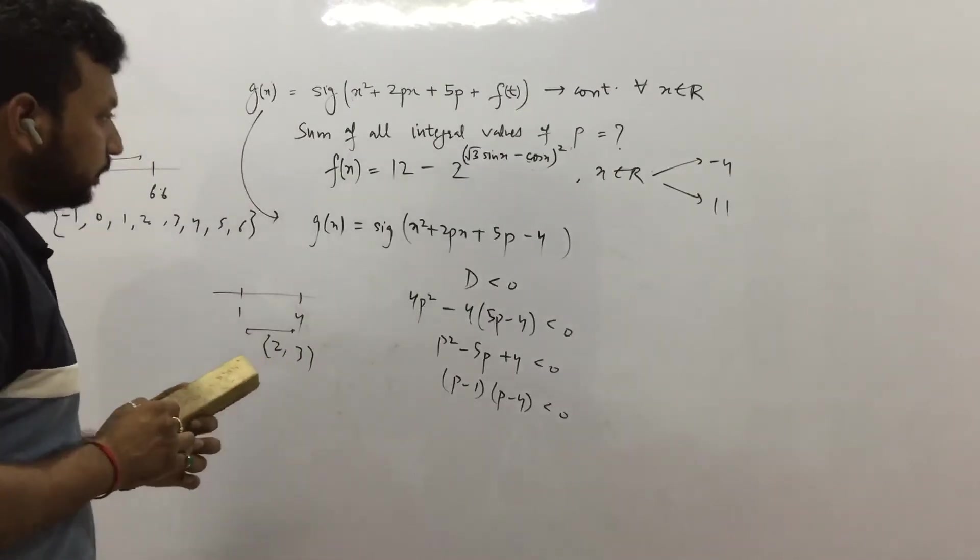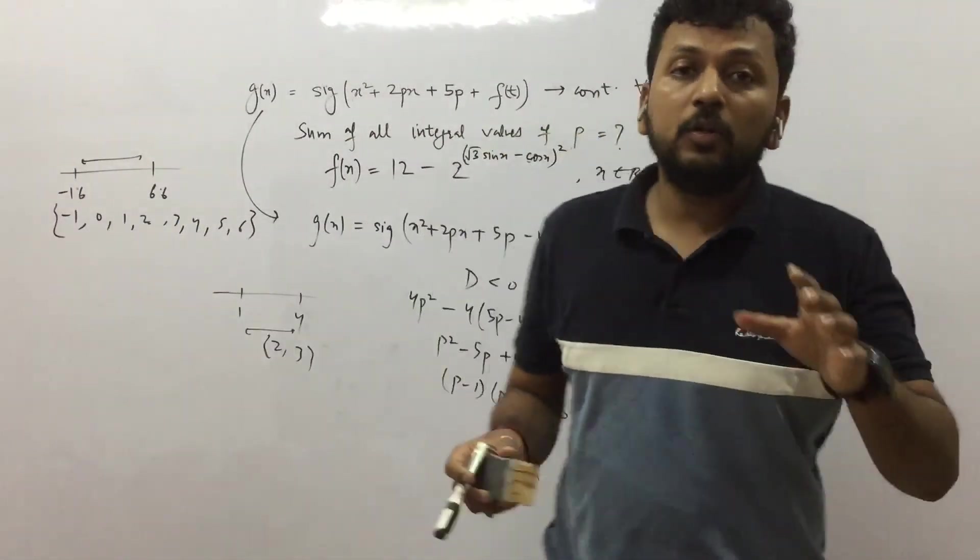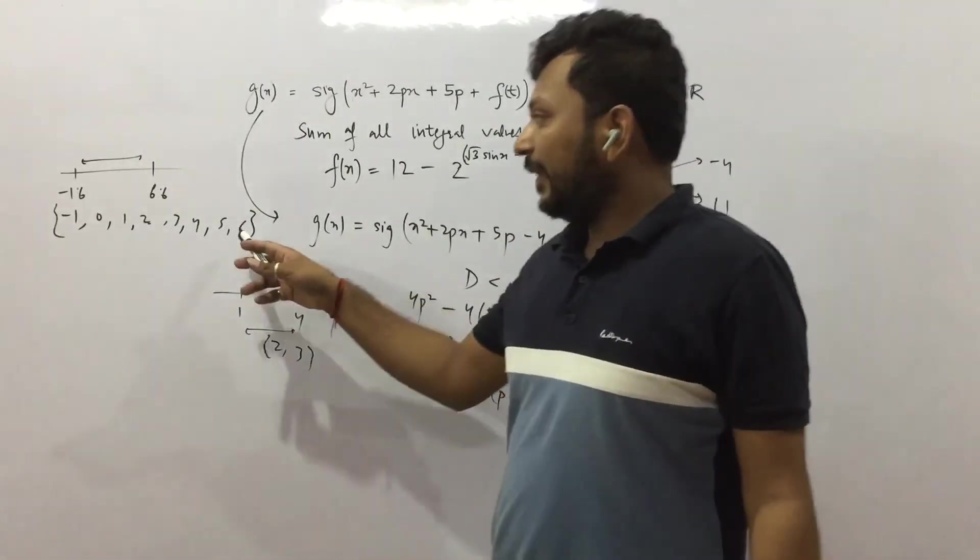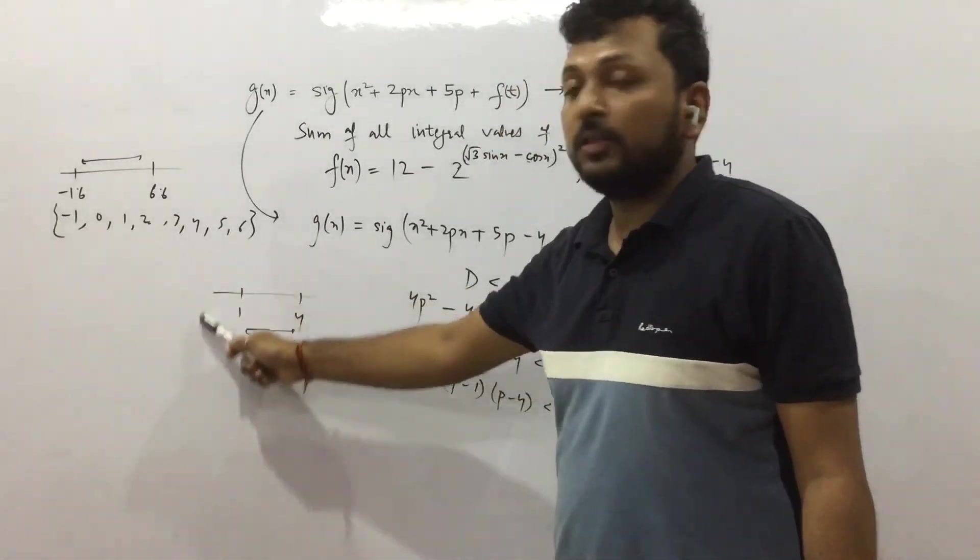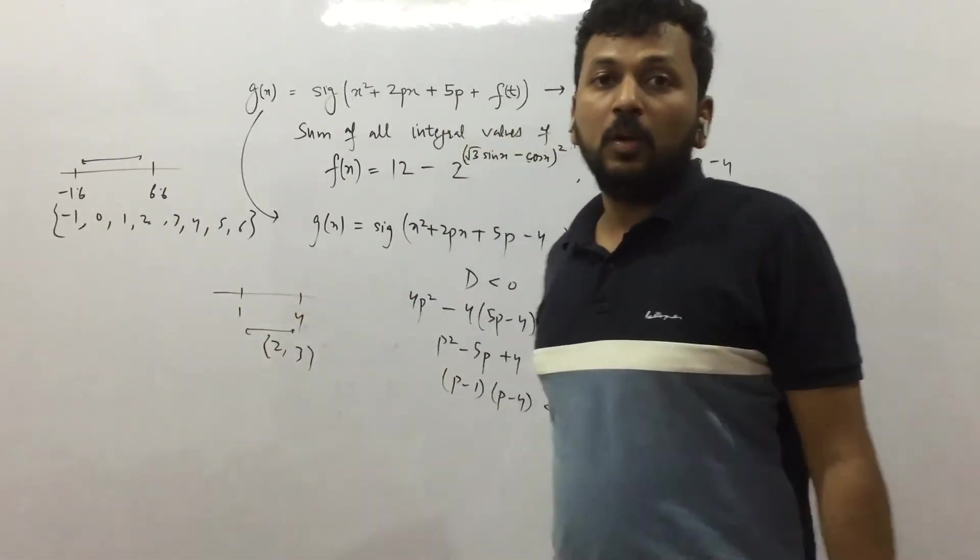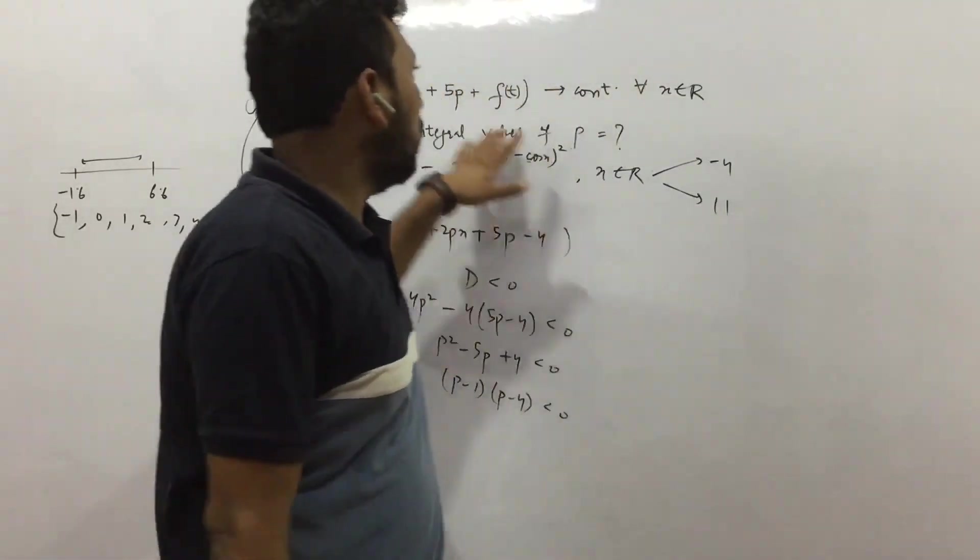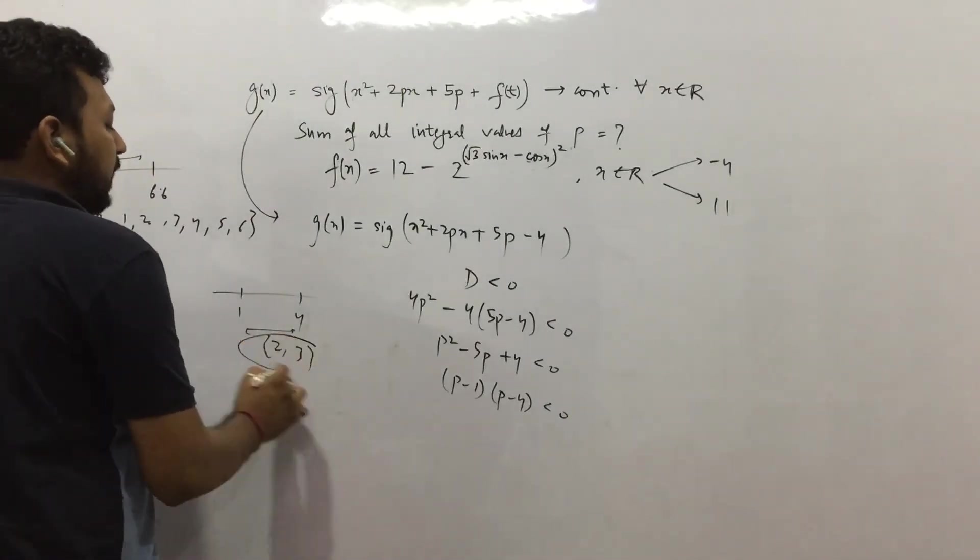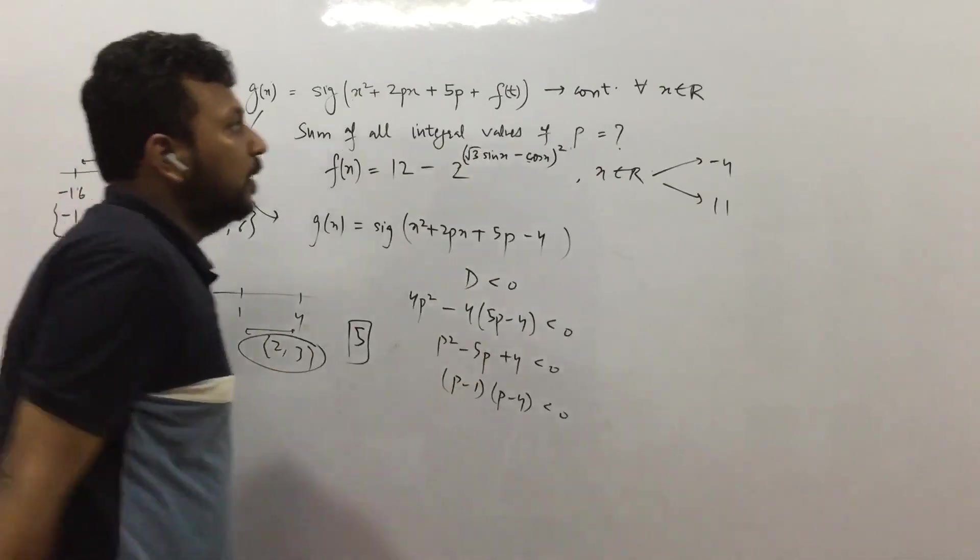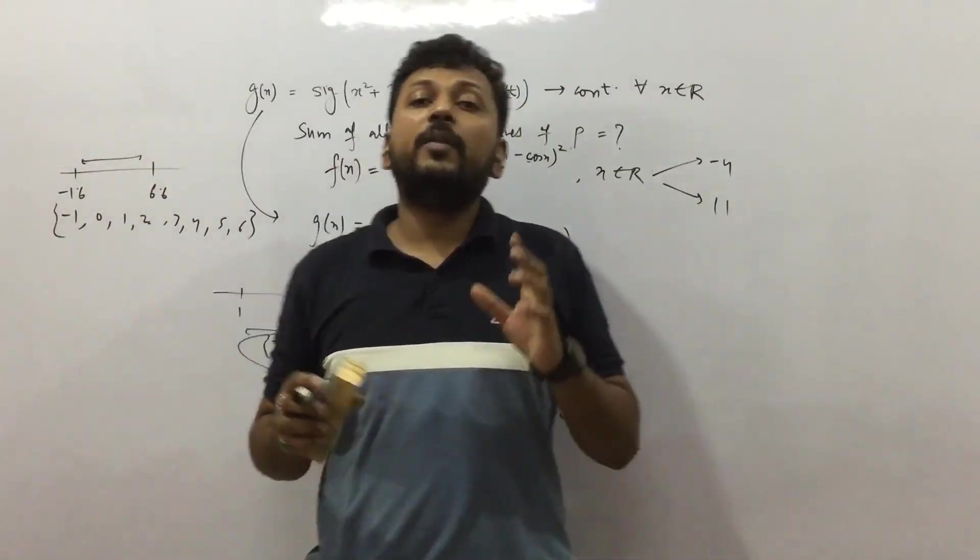So see we have two options. We will take the intersection of both the cases because we want continuity always. So if I take 6 as a case, that won't satisfy this part. But if I take 2 as a case, it will satisfy this part. So that means only 2 and 3 p can be, so that this is always continuous. Now the addition of 2 and 3 will give you 5. So 5 is the answer to this question, sum of all the integral values of p so that the above graph is always continuous.